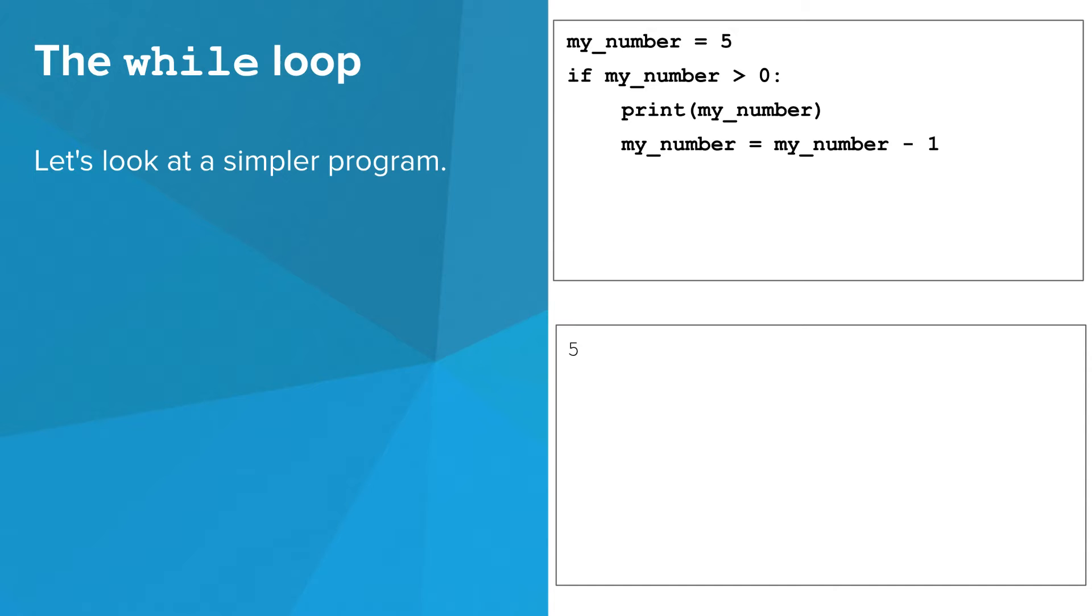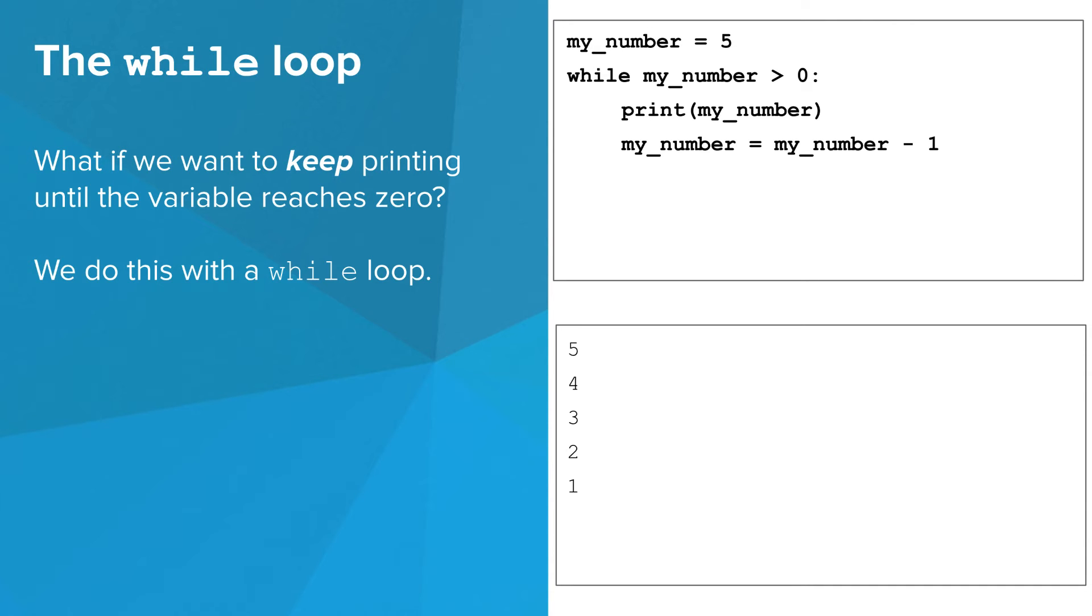and finally, print it and decrement it if it was greater than 0. What if we want to keep printing until the variable reaches 0? We do this with a while loop.